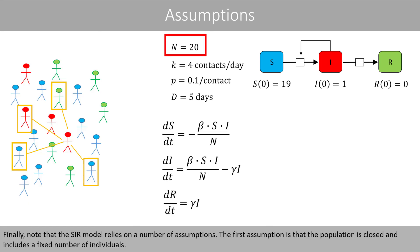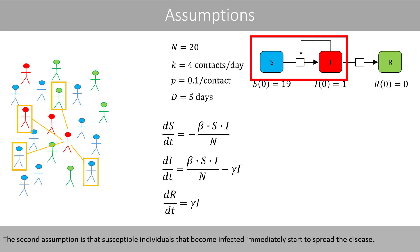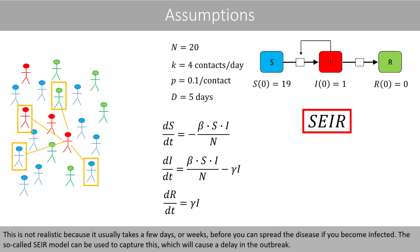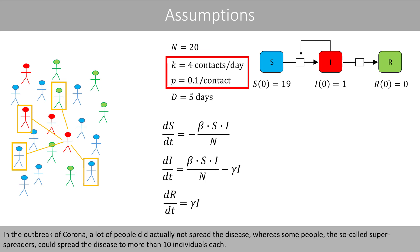Finally, note that the SIR model relies on a number of assumptions. The first assumption is that the population is closed and includes a fixed number of individuals — in the real world, people travel in and out. The second assumption is that susceptible individuals who become infected immediately start to spread the disease, which is not realistic because it usually takes a few days or weeks. The so-called SEIR model can be used to capture this, causing a delay in the outbreak. Another assumption is that all individuals have the same number of contacts per day and the same probability to spread the disease — in the outbreak of corona, some people known as super spreaders could spread the disease to more than 10 individuals each.